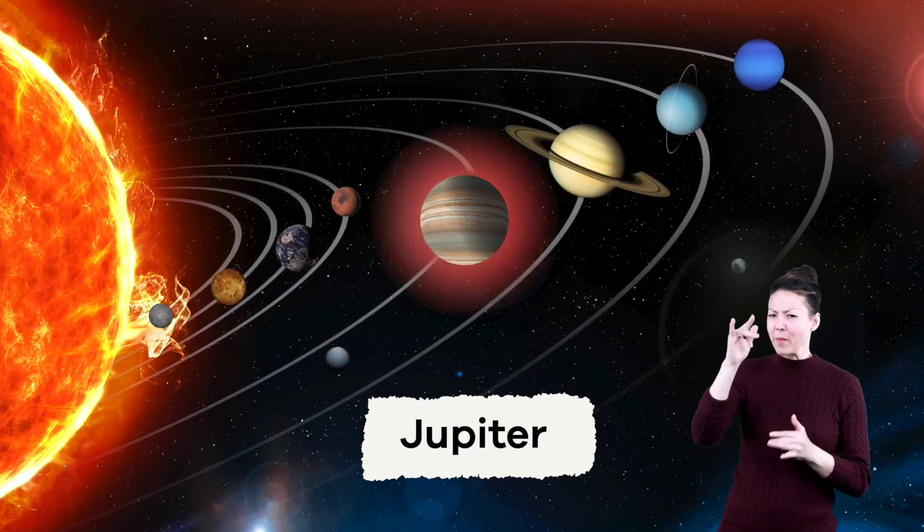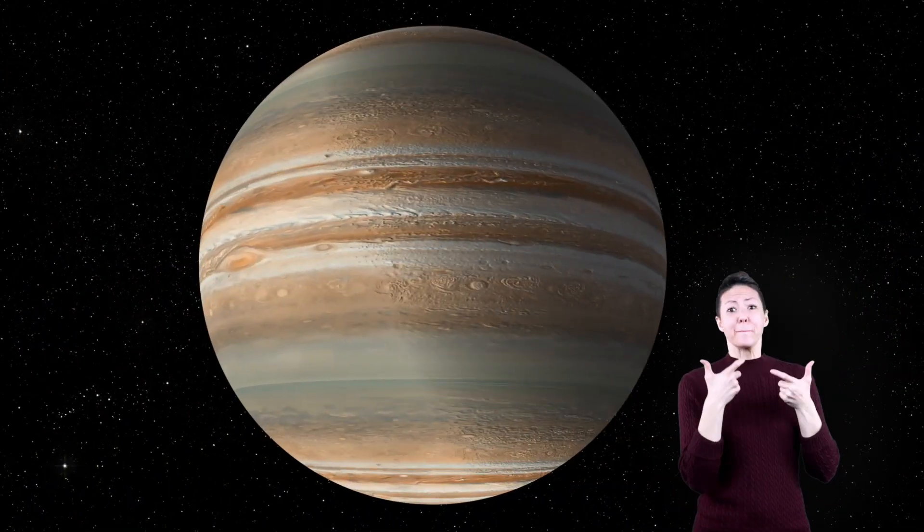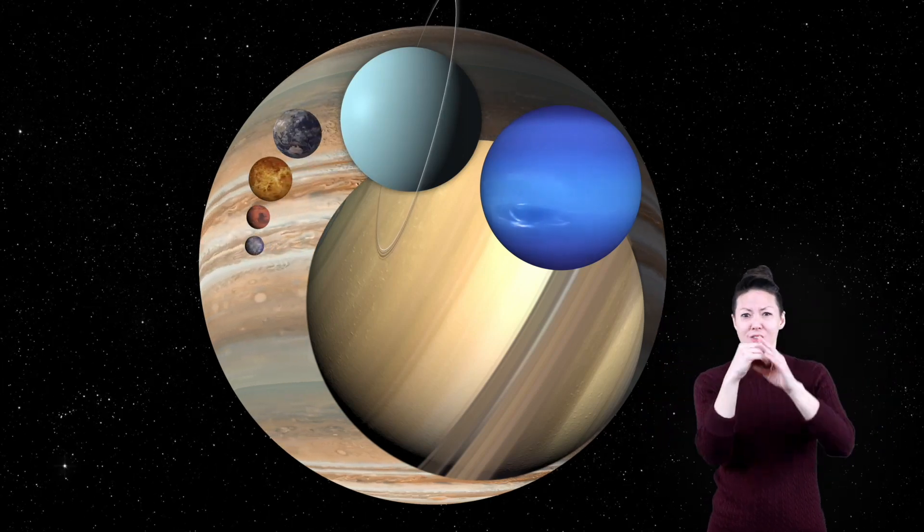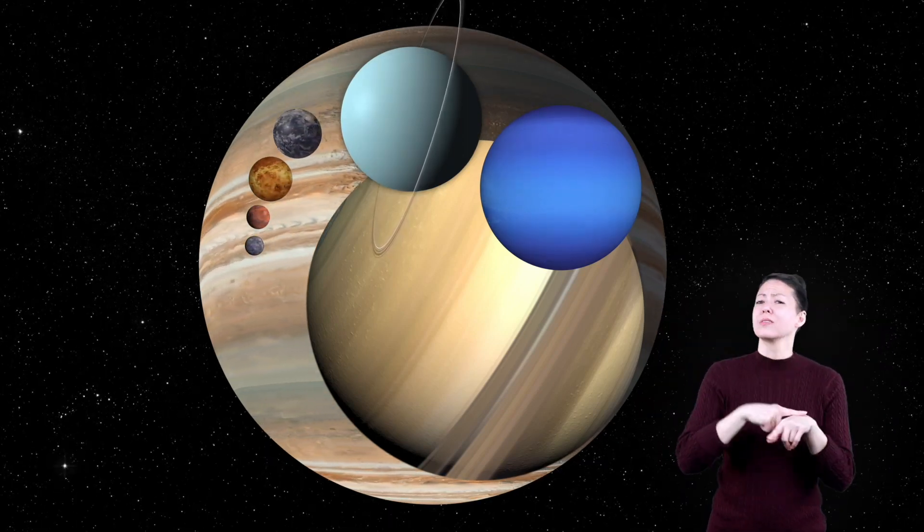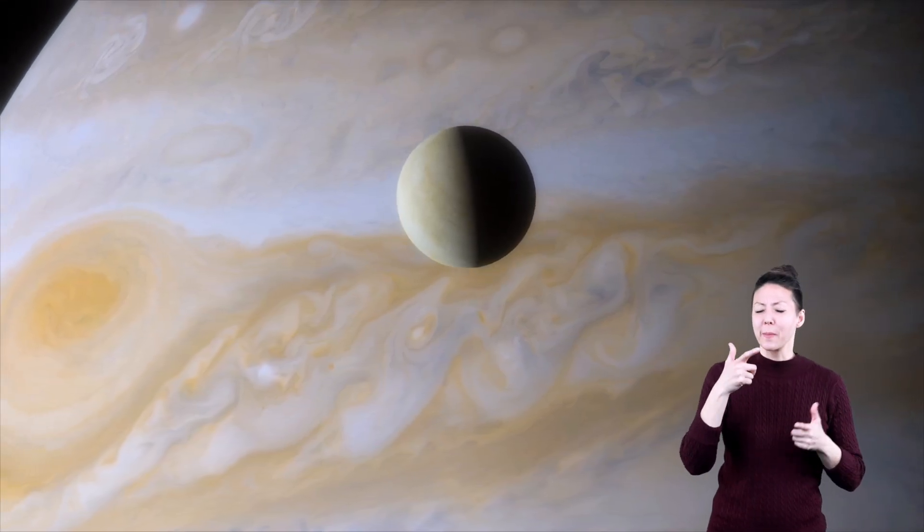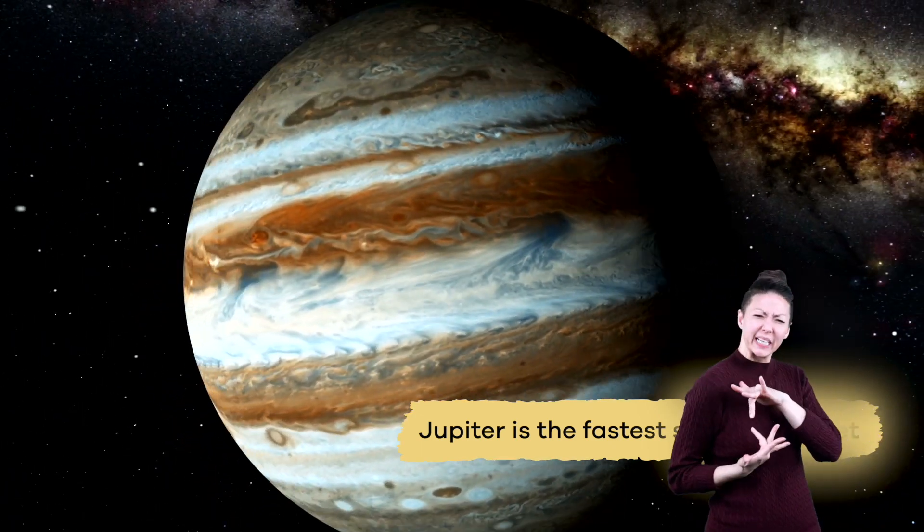Jupiter is the largest planet in our solar system. It's so big that if you took all the other planets and squished them together, Jupiter would still be over two times bigger. Not only is Jupiter the biggest planet, but it is also the fastest spinning planet in our solar system.